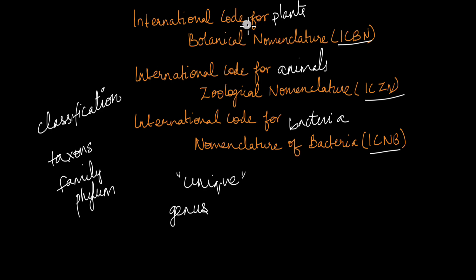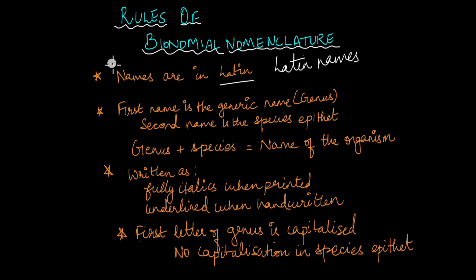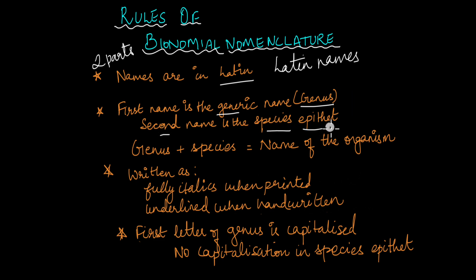There are some rules or codes that are common between all these organizations. First, the names of organisms are written in Latin or are derived from Latin, which is why they are known as Latin names. Second, binomial nomenclature means two parts: the first part is the generic or genus name of that organism, and the second part is the species epithet.